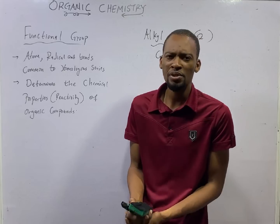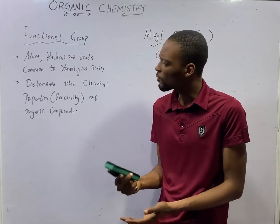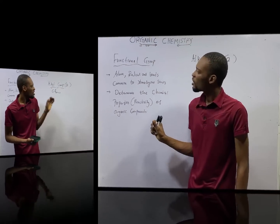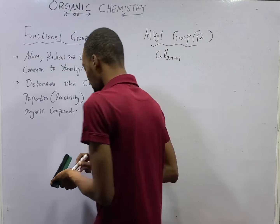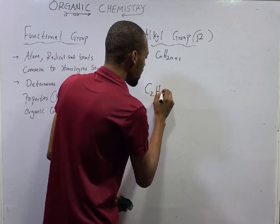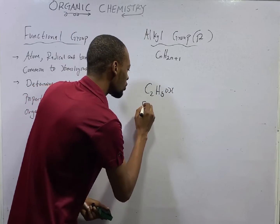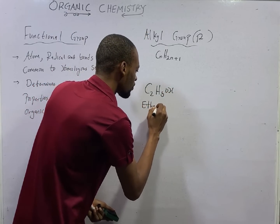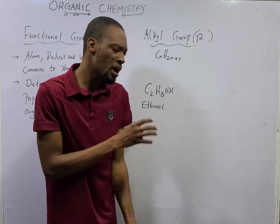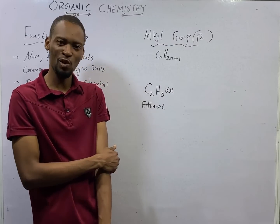In the previous episode, I explained homologous series. Any time you hear homologous series right now, it should make more sense to you. Let me give you an example like this: if you have C2H5OH, this is ethanol — a member of the alkanols or alcohols, also known as 'ogogoro'.